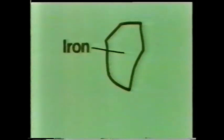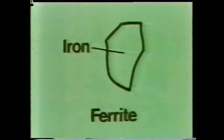Let's take a closer look at this in a diagram. In the case of steel, there are two different types of grain. We'll look at each in turn. The light grains, like this one, are made up of iron. Engineers call them ferrite.